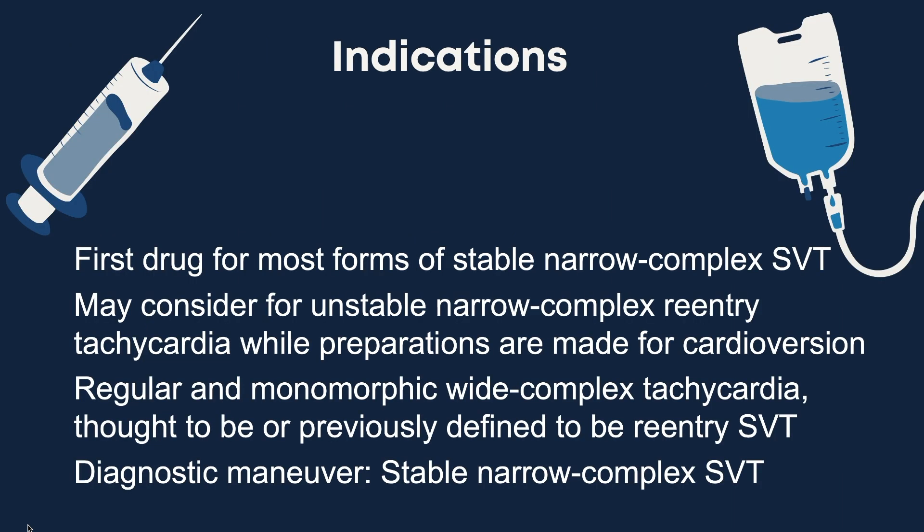Adenosine is the first drug for most forms of stable narrow complex tachycardia or SVT and is effective in terminating those due to re-entry involving the AV node or sinus node. We may consider it for unstable narrow complex re-entry tachycardias while preparing for cardioversion. It can also be used for regular and monomorphic wide-complex tachycardia thought to be re-entry SVT, and as a diagnostic maneuver for stable narrow complex SVT.